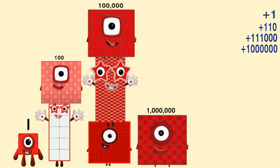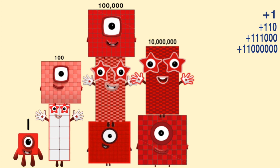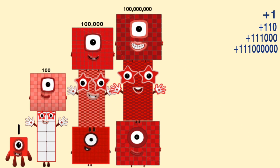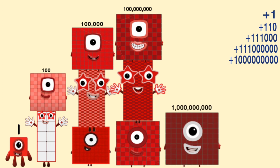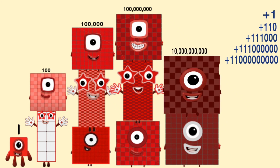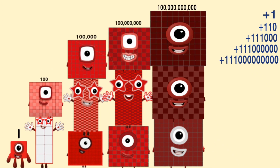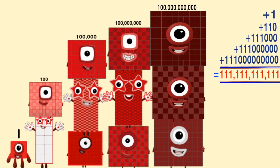One million plus ten million plus one hundred million equals one hundred eleven million. One billion plus ten billion plus one hundred billion equals one hundred eleven billion. The total amount from one up to one hundred eleven billion is one hundred eleven billion, one hundred eleven million, one hundred eleven thousand, one hundred eleven.